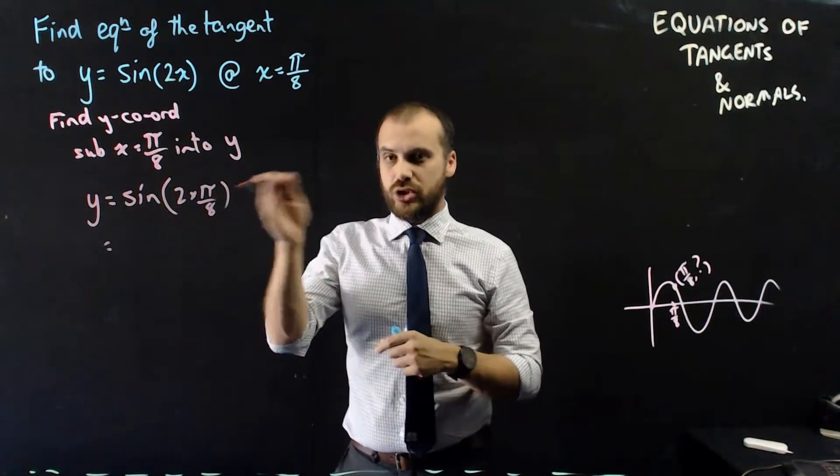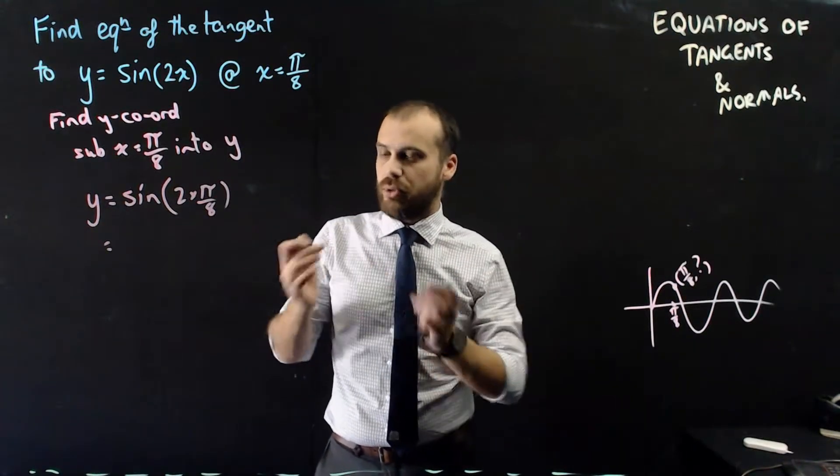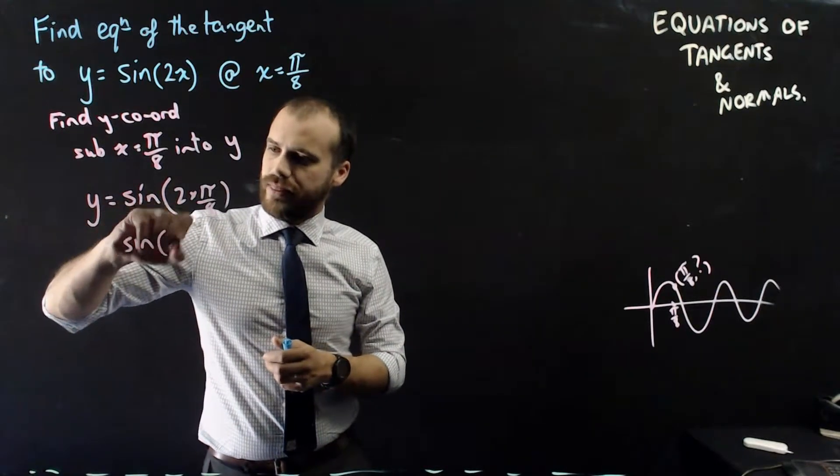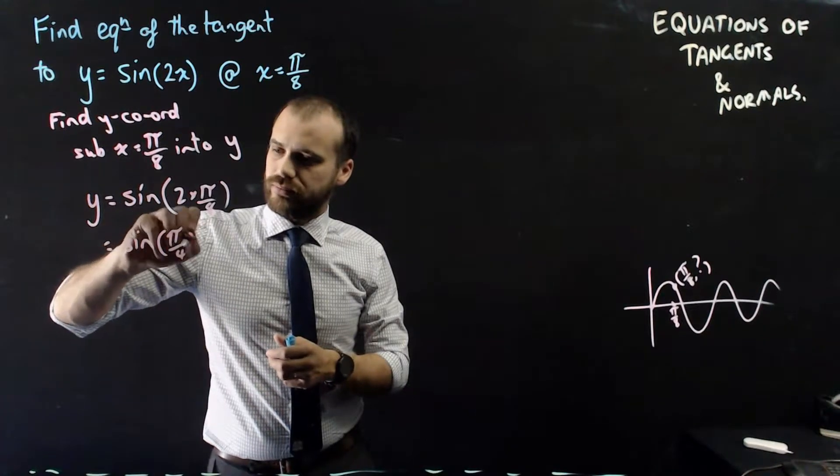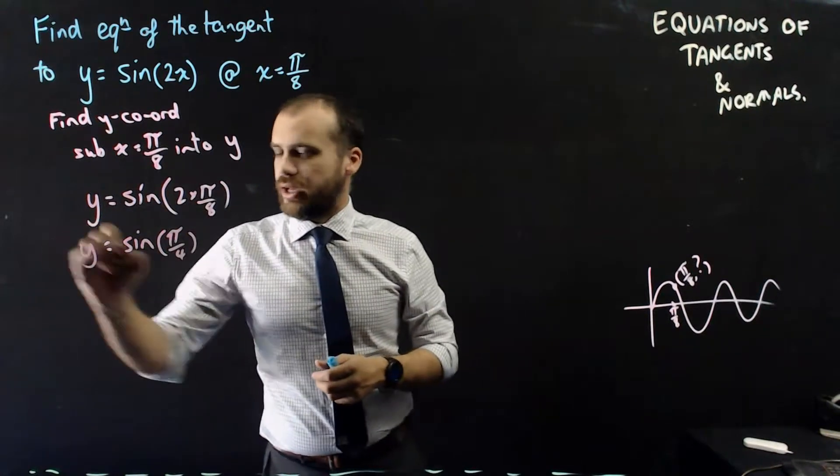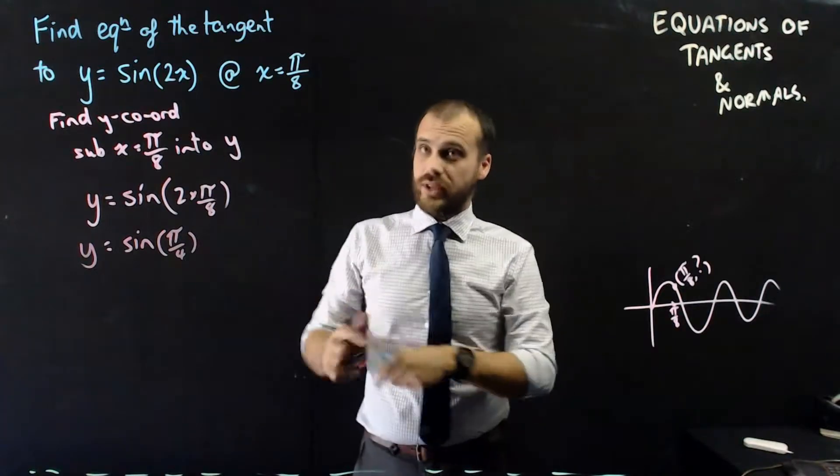y equals sine 2 times π on 8. So 2 times π on 8, that's 2π on 8, which simplifies to π on 4. y equals sine π on 4. Now, if you don't have a calculator, you should still be able to solve that.